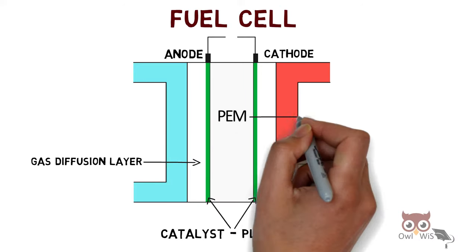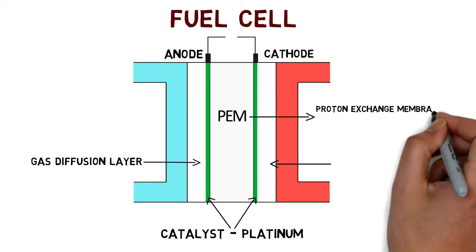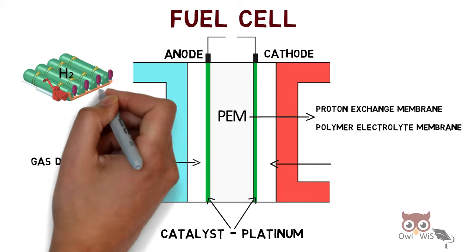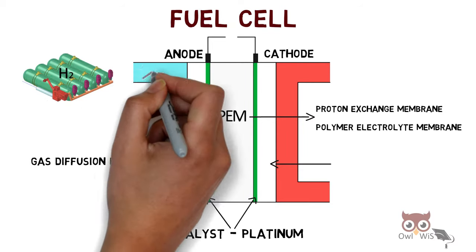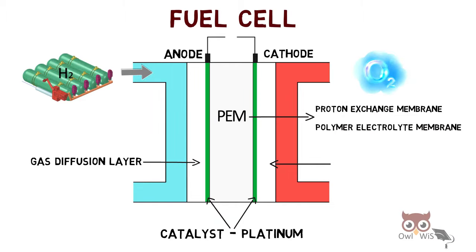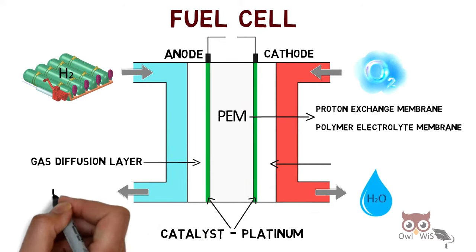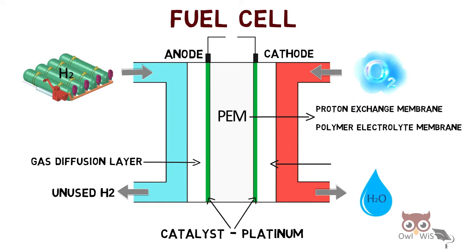There is the PEM layer which is nothing but proton exchange membrane, also called polymer electrolyte membrane. Hydrogen enters from the anode from the hydrogen storage tank and oxygen from the ambient air is taken in. The bi-product is water and heat, and also the unused H2 is recycled.